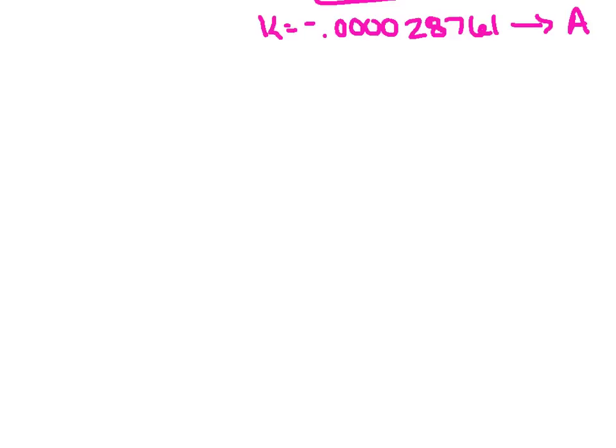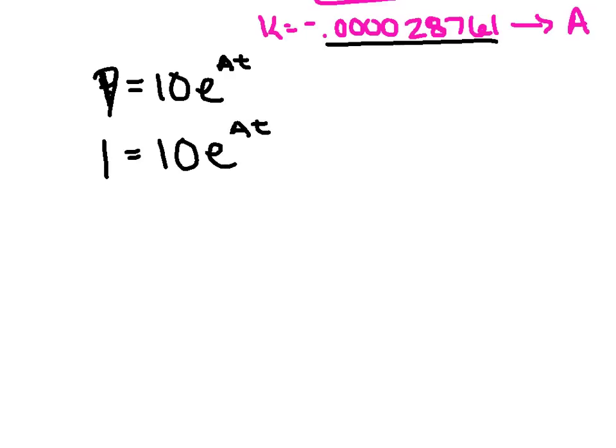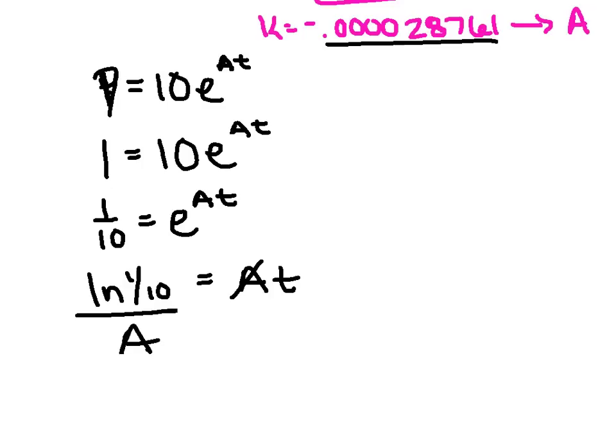The only trick now is we're not quite done. They asked me how long will it take for that 10 grams to decay down to 1 gram. My particular solution looks like P equals 10E to the A times T power, where A represents my stored value. I could substitute the 1 for P. Now we're just going to use our algebraic skills to solve for T. We'll divide the 10 over. We'll take the natural log of both sides. Then we'll divide both sides by alpha A. It's turning out to be about 80,059 years for that 10 grams to decay down to just 1 gram.